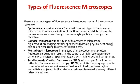There are various types of fluorescence microscopes. The epifluorescence microscope is the most common type, in which the excitation of the fluorophore and the detection of the fluorescence are done through the same light path. The confocal microscope enables high-resolution imaging of thick specimens without physical sectioning, using the fluorescent label. This section is a bit thicker compared to the one used in the epifluorescence microscope.